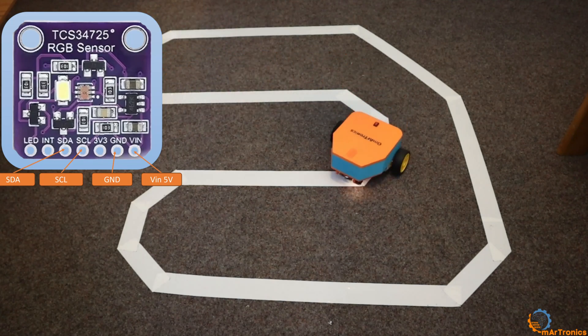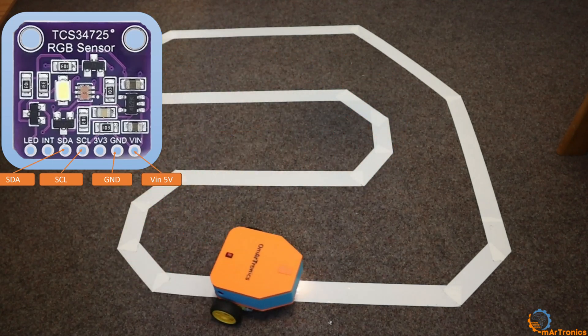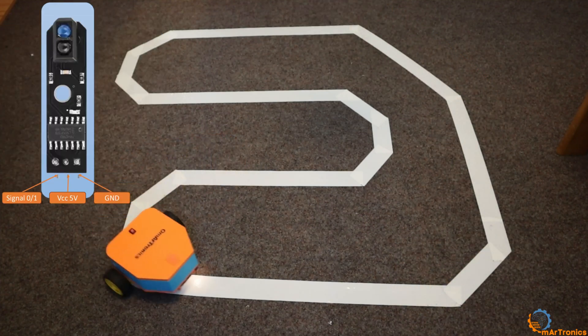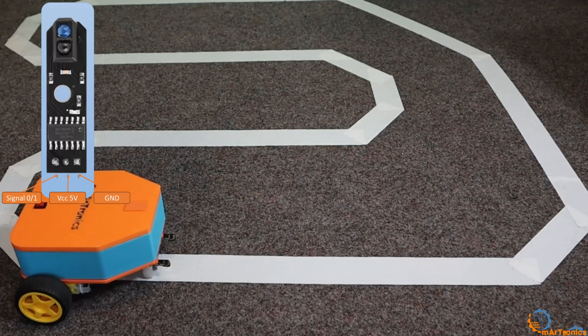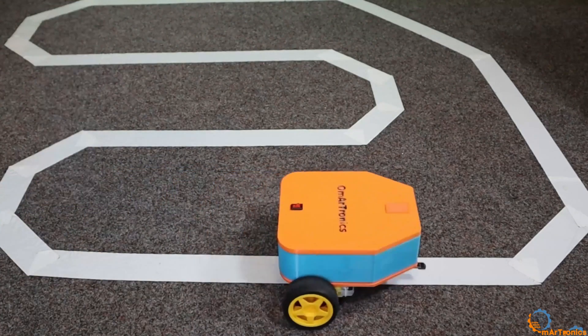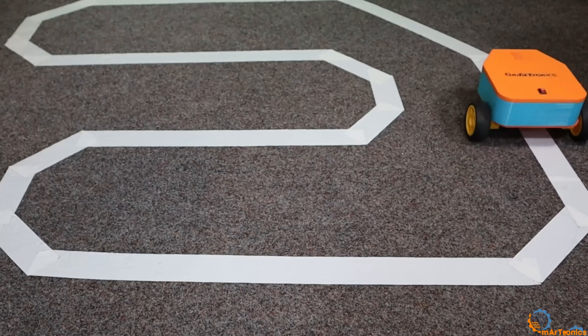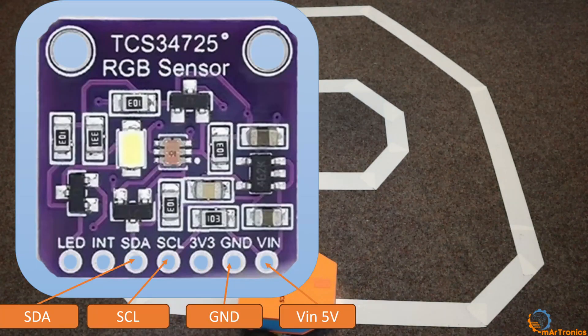In the previous video, we designed the robot, printed it, assembled it, and programmed it to follow the line using the KY033 sensor. The result is that the robot follows the line, but the movement is not smooth and has constant oscillations. This is what we want to avoid with the new approach.